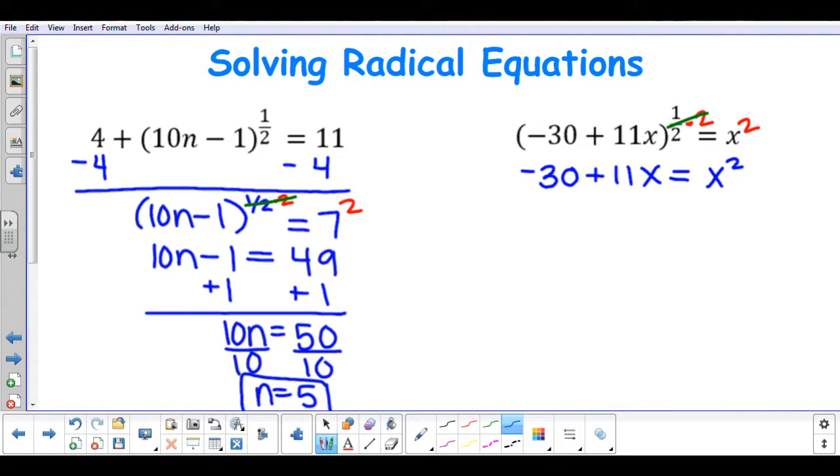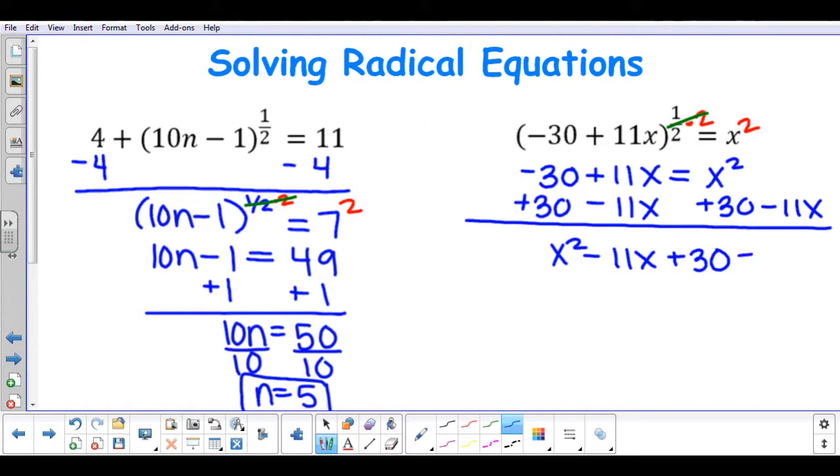Since I have an x squared term, I need to move my negative 30 and positive 11x over to the right side of the equation. So I am going to add 30, and I am going to subtract 11x. So I am going to put those terms in standard form, so I am going to have the equation x squared subtract 11x plus 30 equal to 0.